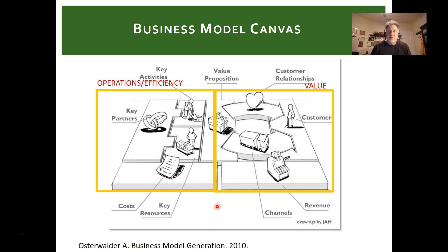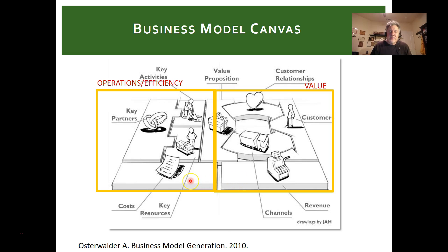You need to bring in value, give value, and extract value so that revenues are coming into the business. On the other hand, you have to operate the business, manage resources, operations, and activities — and that involves costs. What you're hoping for, if you're going to be successful, is that your revenue model is executing at such a rate that revenues are exceeding your costs.